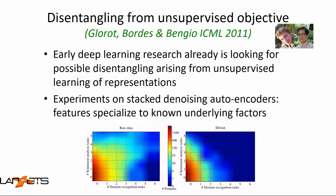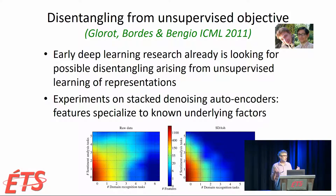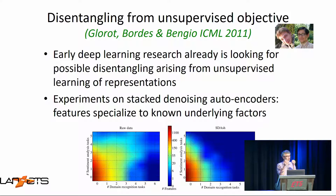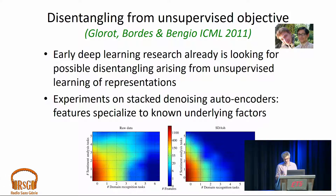We talked about this for a few years, and then in 2011 we actually started doing experiments where we observed that without any special terms in the objective function, simple unsupervised representation learning methods — in those days based on denoising autoencoders — were able to discover representations in which some dimensions seemed to focus on factors we knew were relevant and other dimensions were focusing on other factors.